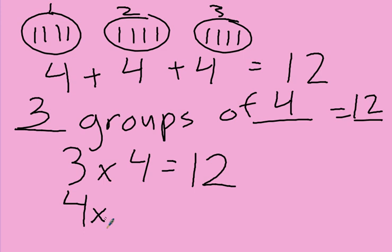It doesn't matter which order you add — it's the same with multiplication. It doesn't matter what order I multiply the numbers; the answer is still going to be twelve. I'll show you right over here. I'm going to make four groups of three this time.